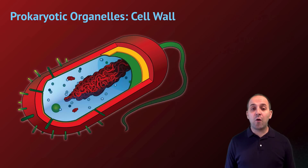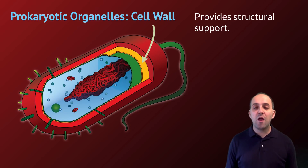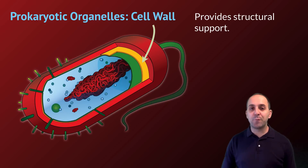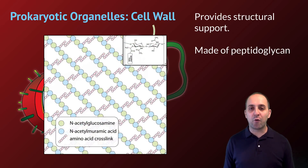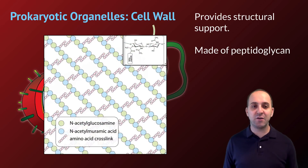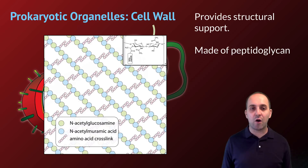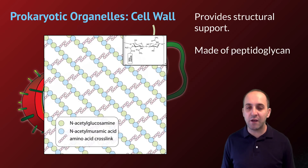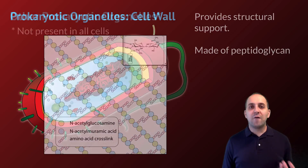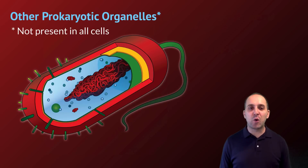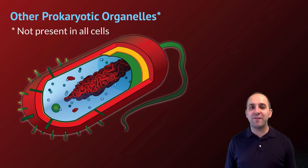Moving to the outside of the cell, we have a cell wall present in prokaryotic cells. This gives prokaryotic cells structural support, and it's made out of a modified polysaccharide called peptidoglycan. This image shows how the peptidoglycan subunits are all associated to make the bacterial cell wall. Of course, this is not an exhaustive list of prokaryotic organelles, but it covers the main ones you should be familiar with.